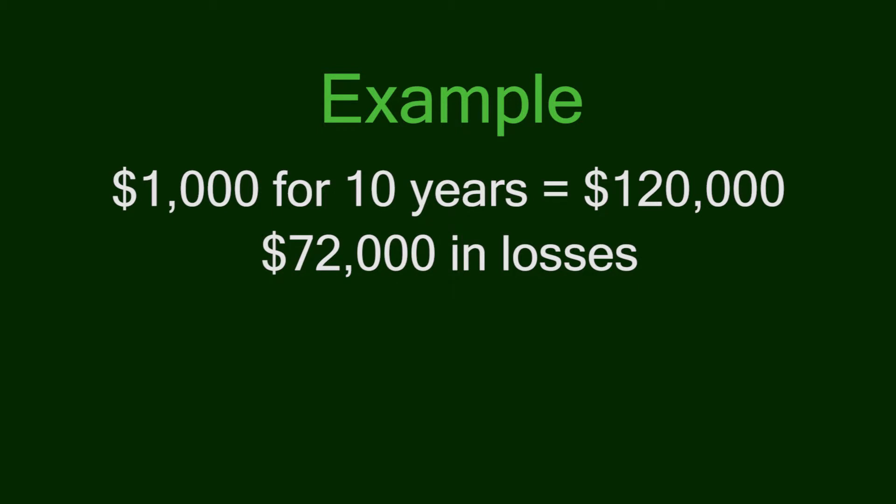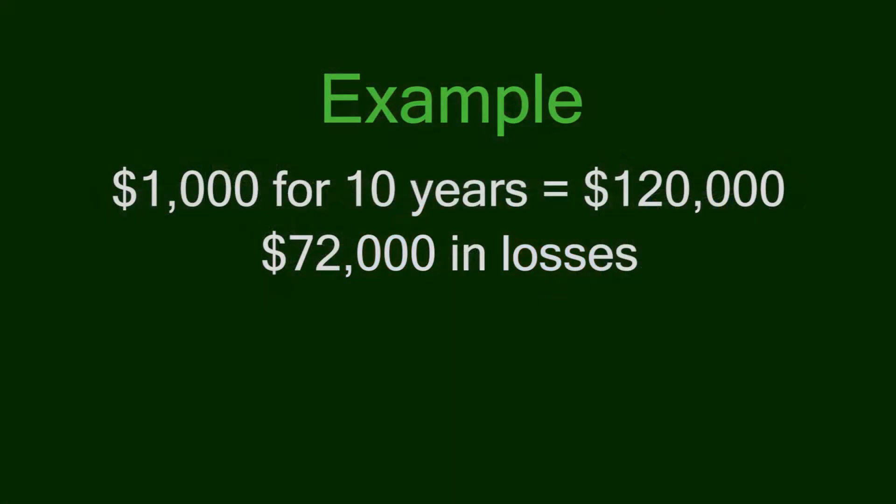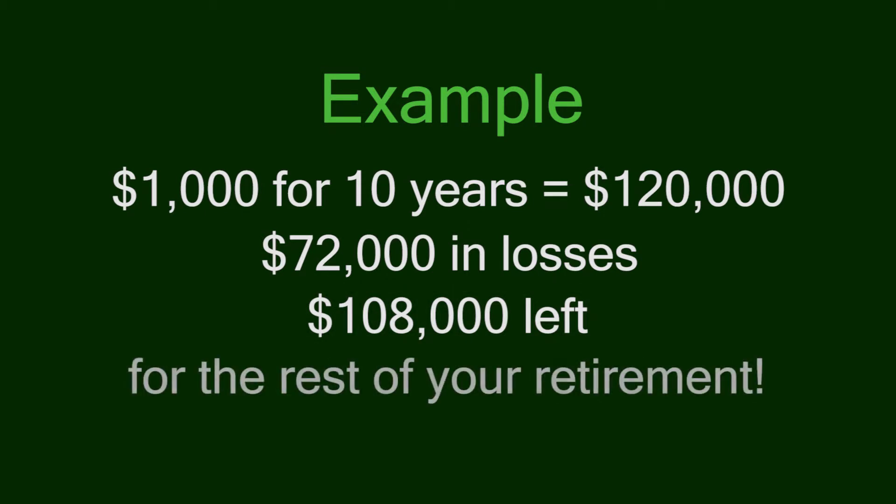How did you lose $72,000 if the market was flat? Because you were selling more shares when the market was down, having to liquidate at a bad time. With the $72,000 in losses plus the $120,000 you withdrew, you've got only $108,000 left at the end of the 10-year period to see you through the rest of your retirement. If you cashed it all in, that $108,000 might see you through maybe another nine years of income. Not a good plan.